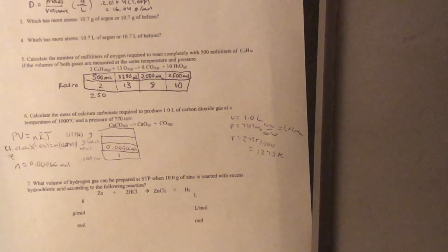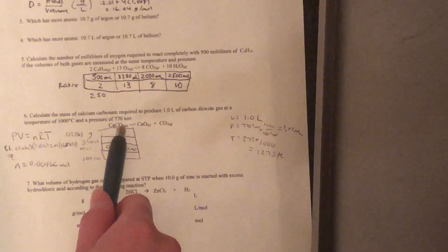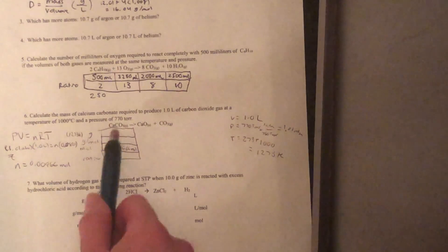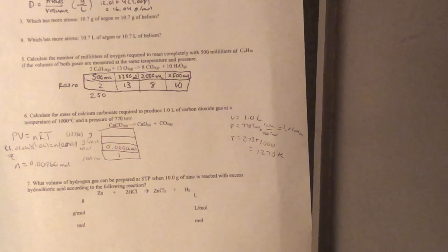The way that we get our grams per mole, and you guys know how to calculate this, the molar mass of calcium plus carbon plus 3 oxygens. So our molar mass, I'll just go ahead and fill it in for you guys, is 100.1 grams per mole.